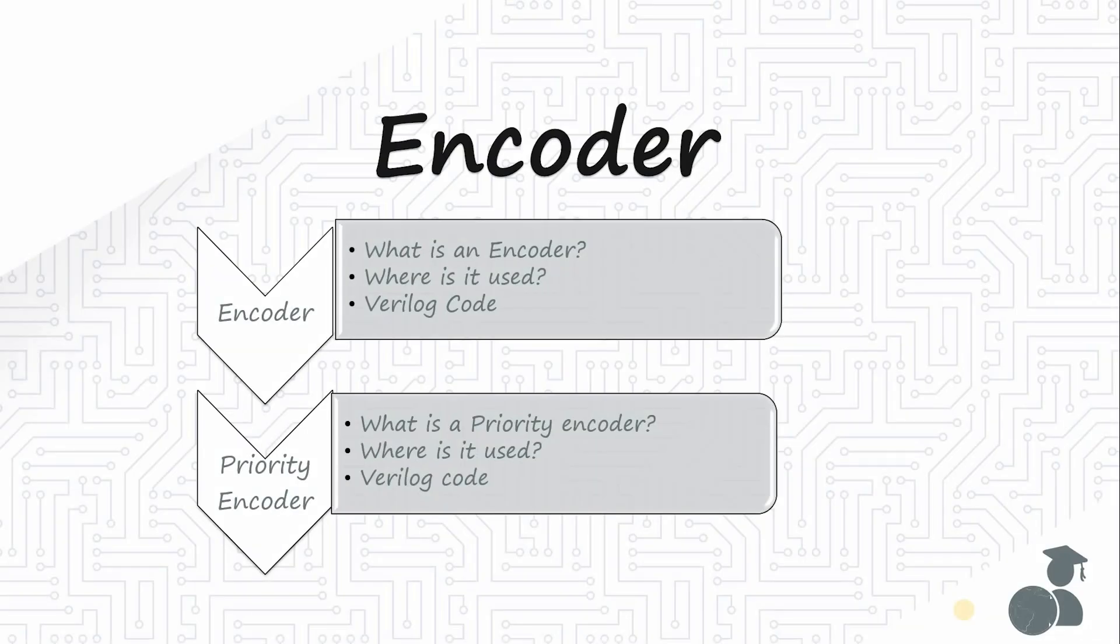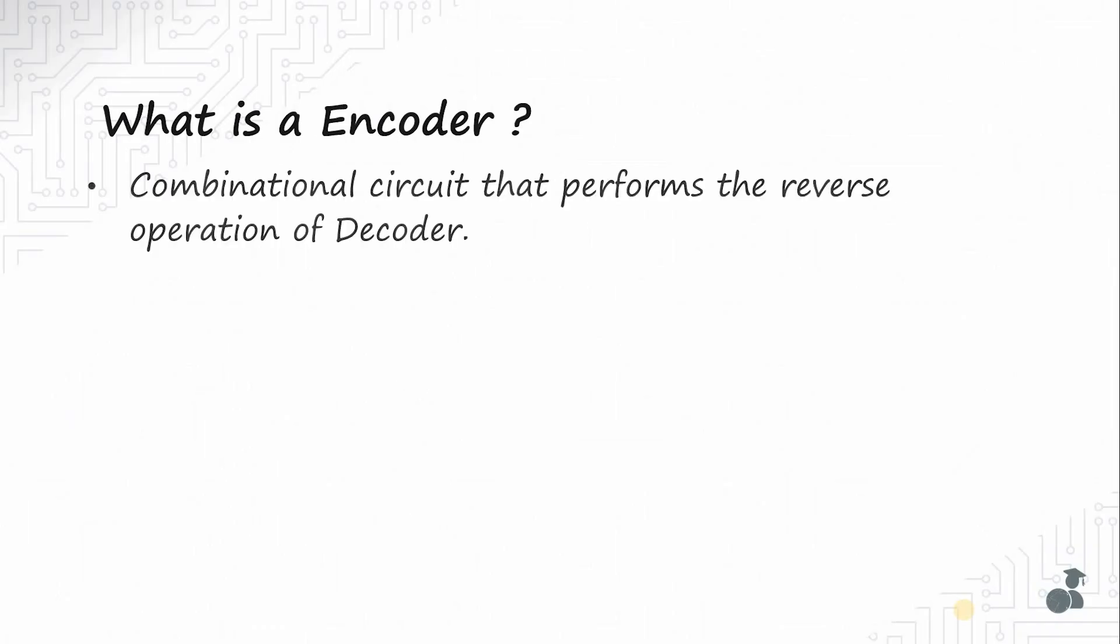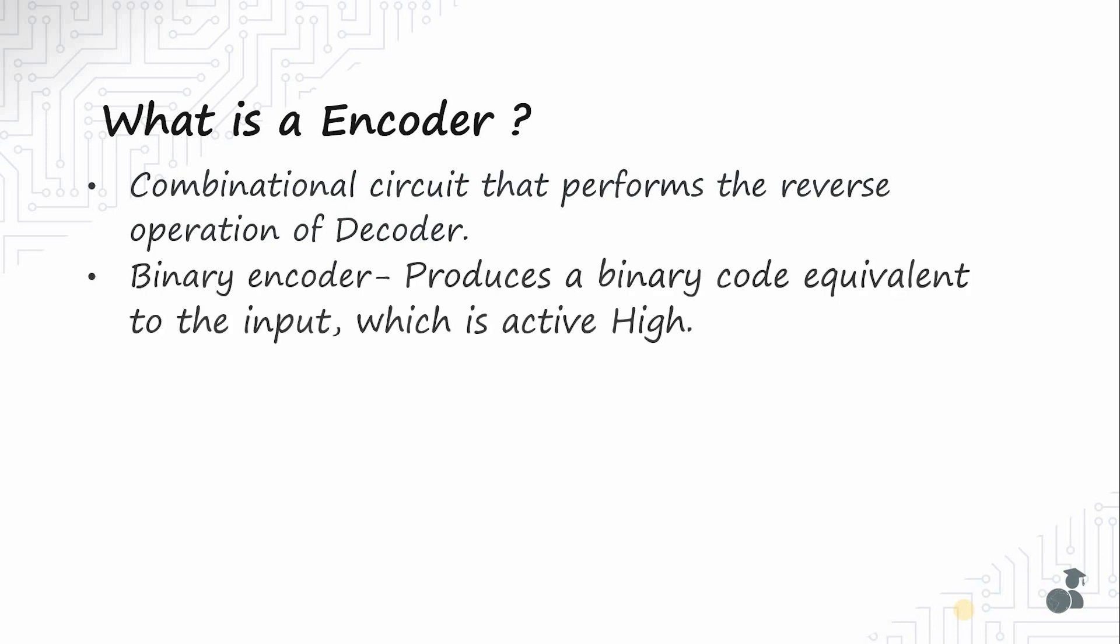Today's video we'll be understanding the encoder. An encoder is a combinational circuit that performs the reverse operation of the decoder. A binary encoder has a maximum of 2N input lines and N output lines. It will produce a binary code equivalent to the input line which is active high.